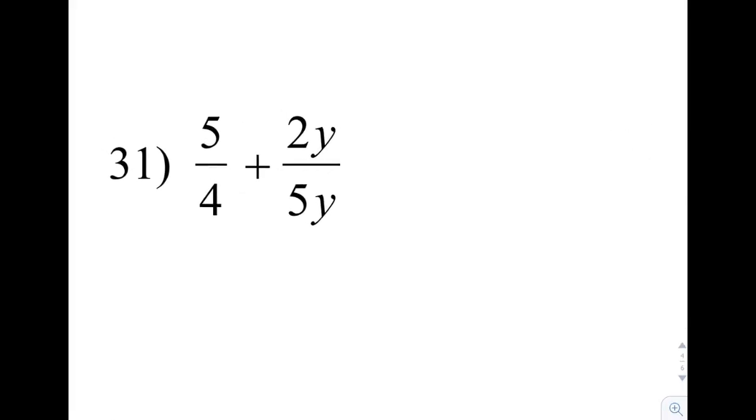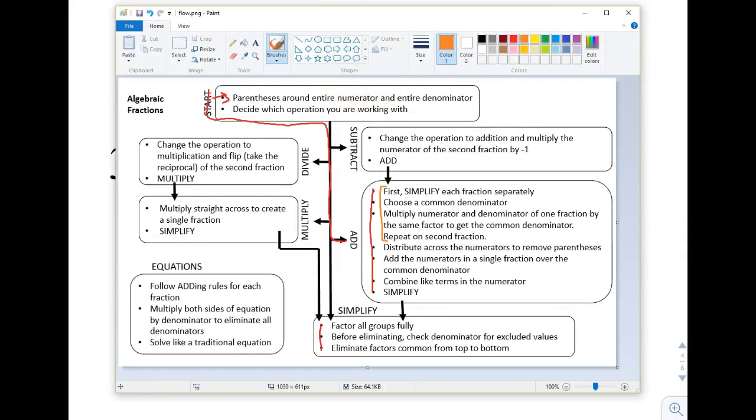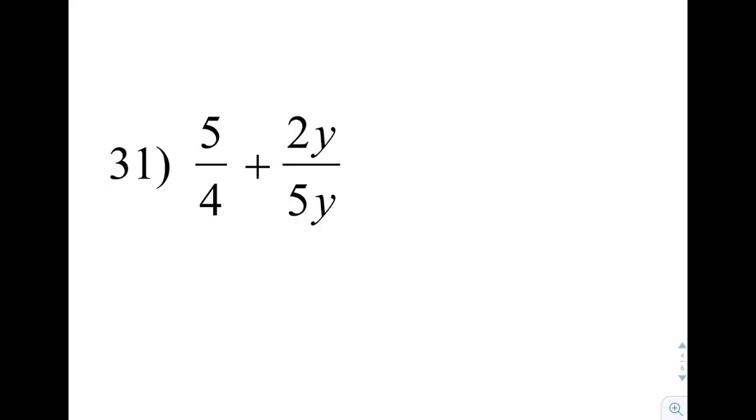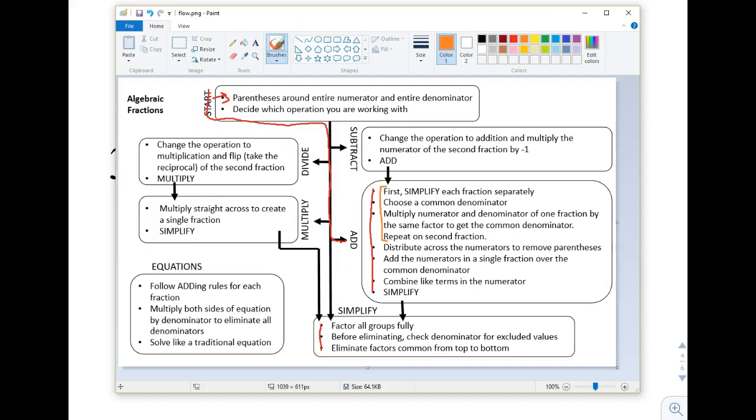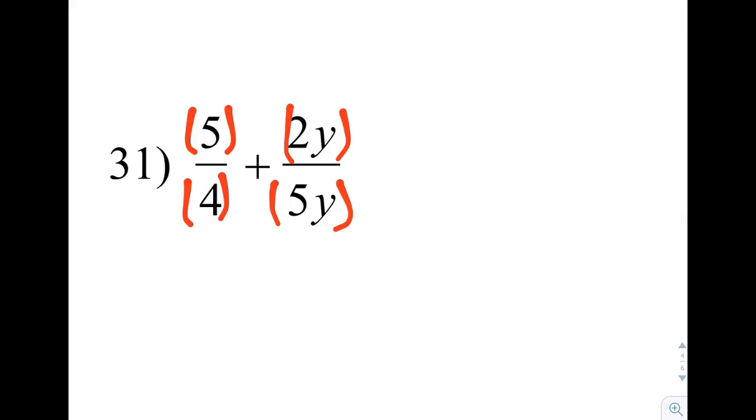This one here, we have 5 fourths plus 2y over 5y. Let's follow our flow. We start at the beginning, parentheses around the entire numerator and denominator. Next step says we are going to add. First, simplify each fraction separately. In this case, 5 over 4 does not simplify. 2y over 5y. Even though these are wrapped up in parentheses, we know that since it's multiplication here, we can break this down into 2 times y. Bottom would be 5 times y. And since we have a y on top and a y on bottom both being multiplied, those do eliminate or cancel out.